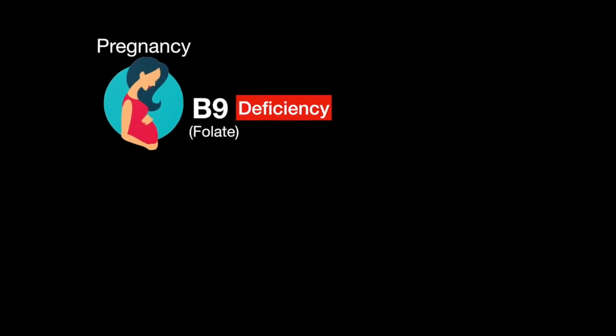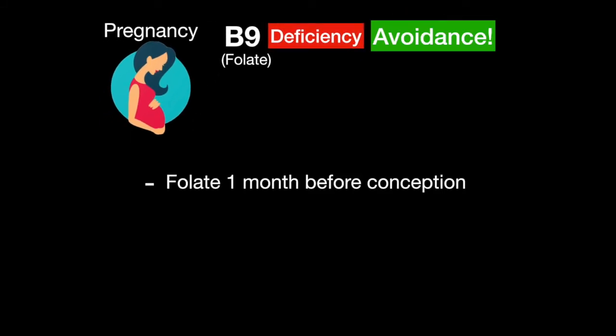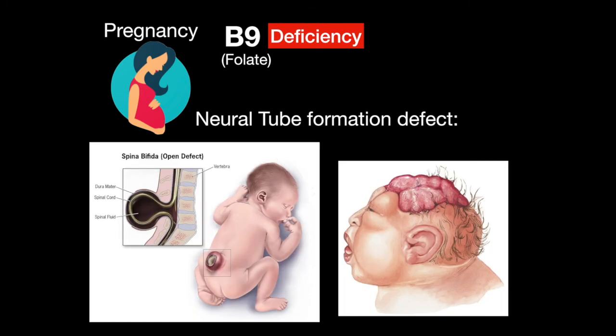To avoid folate deficiency during pregnancy, folate should be given one month prior to conception and during pregnancy. A folate deficiency during pregnancy can cause defects in the formation of the neural tube. That's all for this lesson of Step 1 Review. We'll see you in the next video.